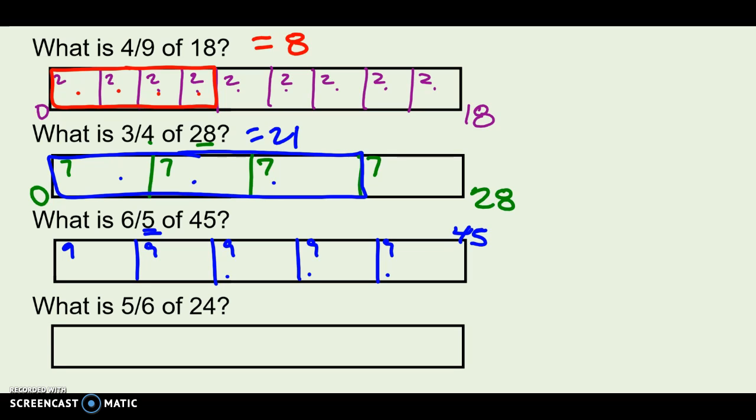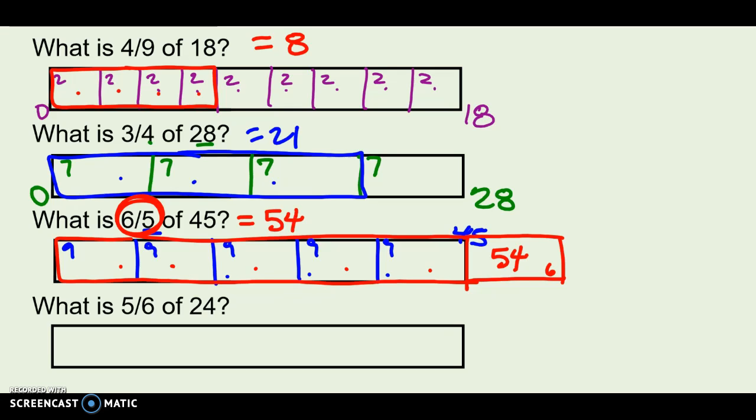I need 6 of them. So, 1, 2, 3, 4, 5. It looks like I have to add on another section to get 6. This would be my sixth one. So, 9, 18, 27, 36, 45, 54. In this case, I actually have an improper fraction, which means I'm going to end up with a number bigger than I started with. But I can still do it the same way. It still works.